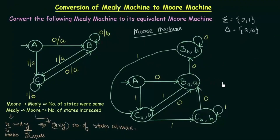You can also draw the transition table for this Moore machine just as you would for any Moore machine. One thing to notice is that all states in the Moore machine have an output associated with them — like BA has A, BB has B — except for the starting state A, which has no output. That is because in the original Mealy machine, state A had no incoming edges, only outgoing edges. So no output gets associated to it; you could assign either A or B — it does not matter.